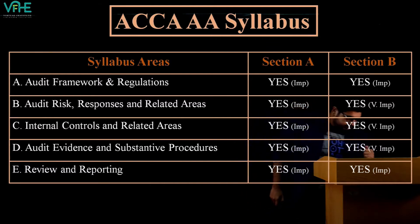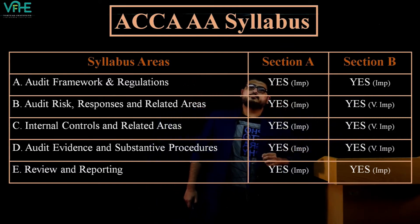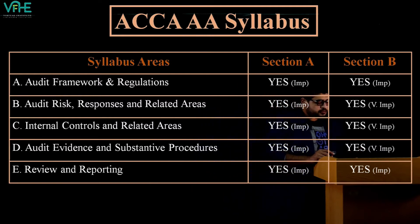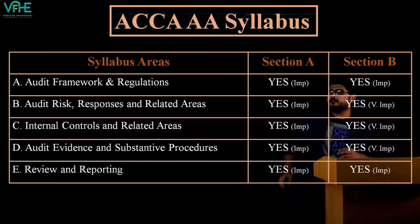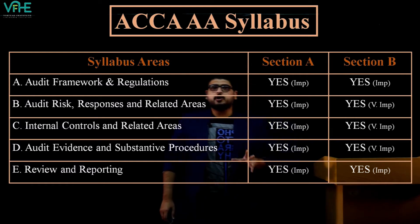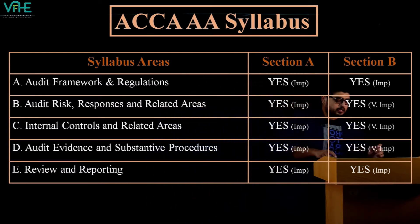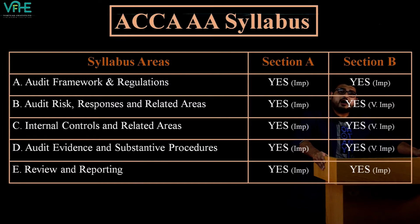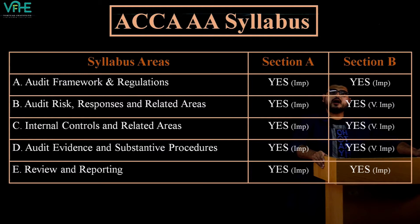The syllabus has five sections: Audit Framework and Regulations, Audit Risk Responses and Related Areas, Internal Control and Related Areas, Audit Evidence, and Review and Reporting. For Section A, every area is important since you don't know what the examiner might ask — you cannot leave any area.